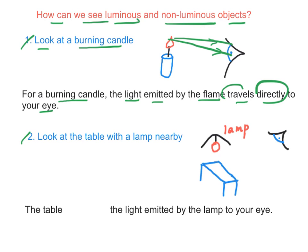Next, if we look at the table with a lamp nearby, the table is non-luminous objects, but it will reflect the light emitted by the lamp to your eyes.